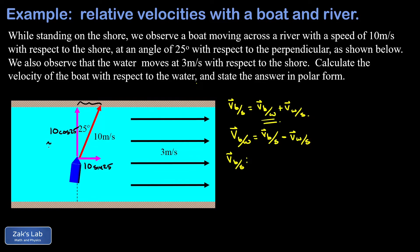Getting approximate values: the y-component is about 9.06 and the x-component is about 4.23. We can write this vector as 4.23 m/s î + 9.06 m/s ĵ, or just list the x and y components for the vectors in the subtraction problem.